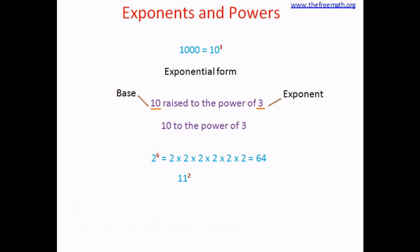Similarly, if you consider 11 squared — also called 11 to the power of 2 — 11 is the base and 2 is the exponent, and you calculate its value as 11 multiplied by 11. How about 3 to the power of 4? 3 is the base and 4 is the exponent. You calculate it as 3 multiplied by 3, four times: 3×3=9, 9×3=27, 27×3=81. So 81 is the value of 3 to the power of 4.